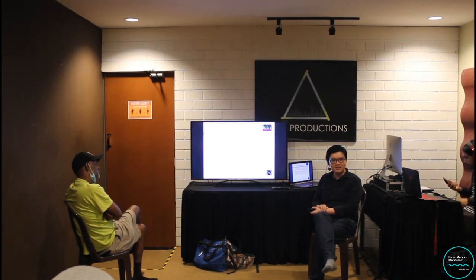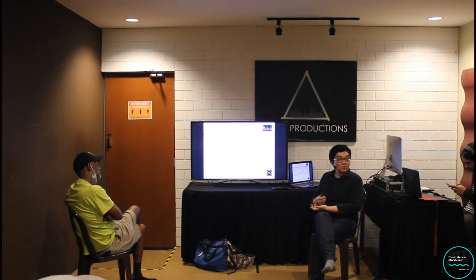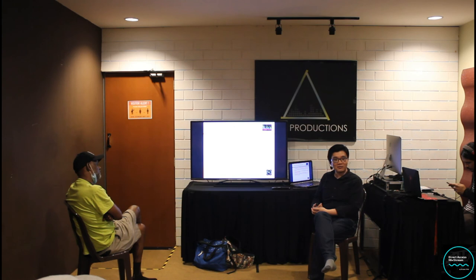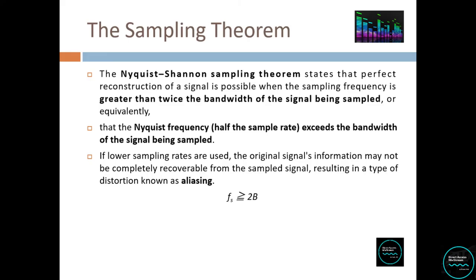Aliasing can sometimes be used as a cool distortion or electronic effect, but it's generally unwanted. To sample a signal properly, your sampling rate must be at minimum twice the frequency — at least greater than the bandwidth. The formula is: fs (sampling frequency) must be greater than 2B, where B is your signal bandwidth. That's your Nyquist rate.